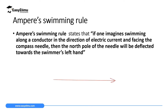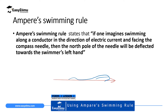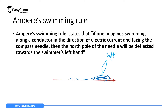This rule states that if you imagine that you are swimming along a conductor in the direction of current and facing the compass needle, then the north pole of the compass needle will deflect towards the swimmer's left hand. So if this is the swimmer, with the left hand on this side and the right hand on the other side, and he is swimming in the direction of current, then a compass needle below will deflect towards the left hand.